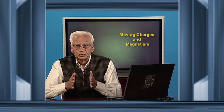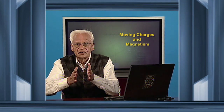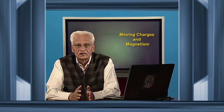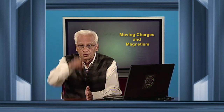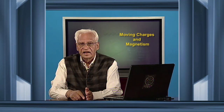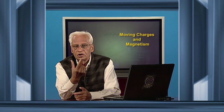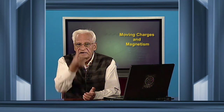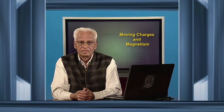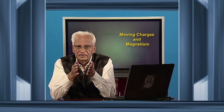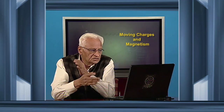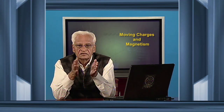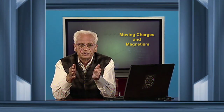So by use of Ampere's law, we have been able to find magnetic fields due to a straight current and also due to a straight cylindrical conductor. In the next lecture, we shall continue with Ampere's law and we shall also find the fields due to a solenoid.